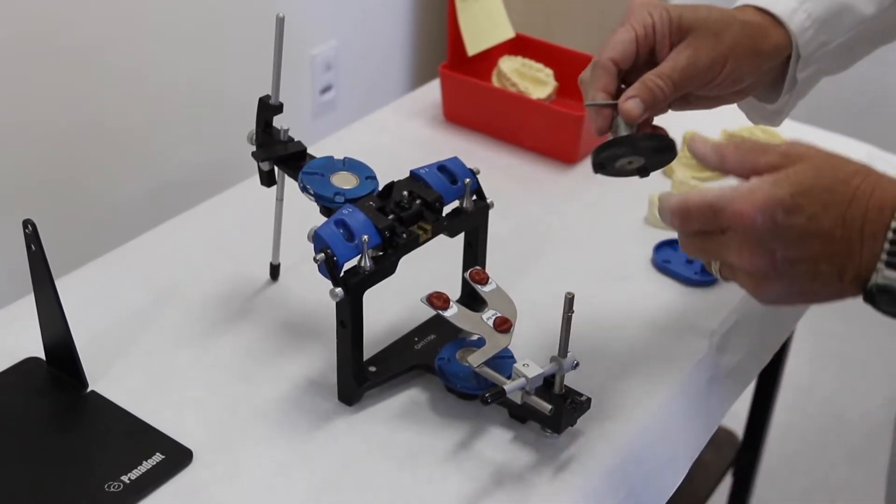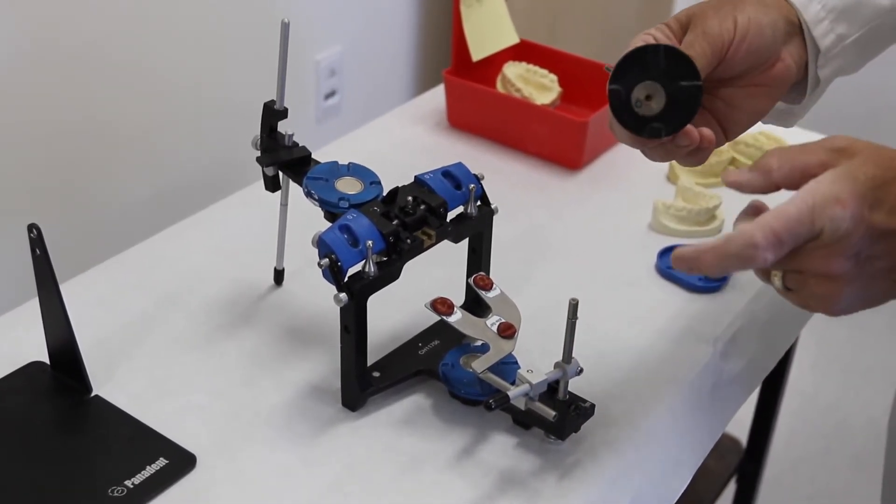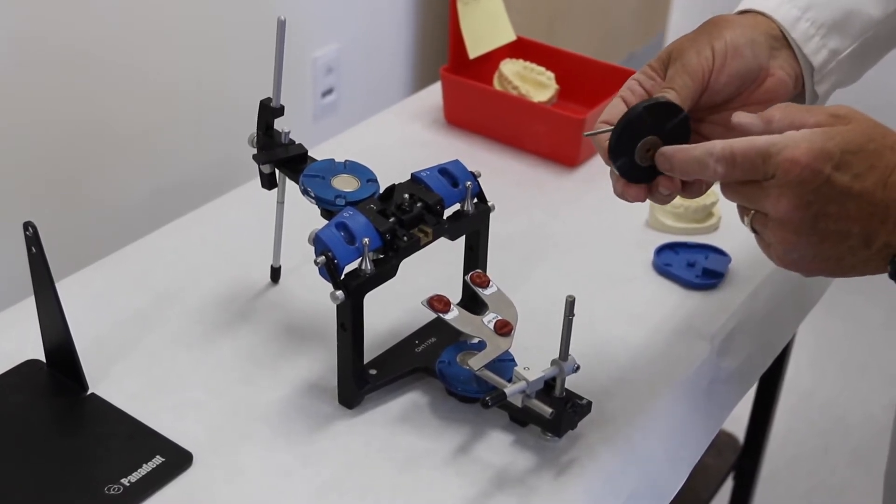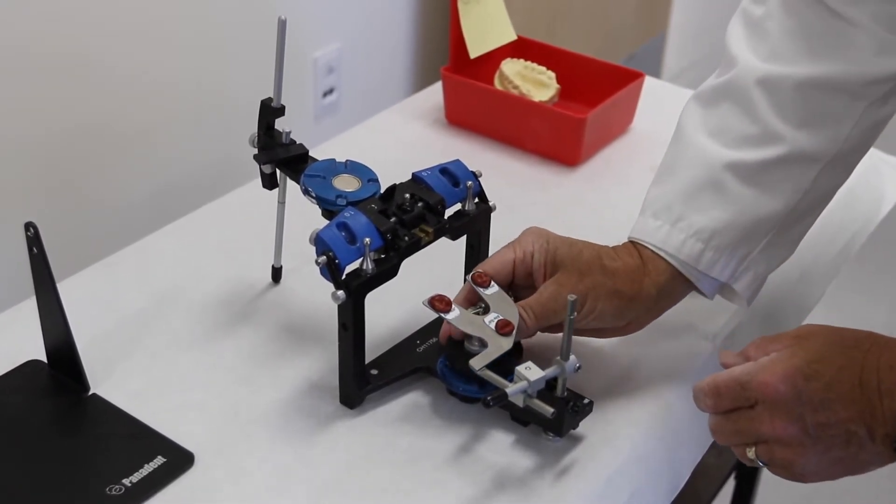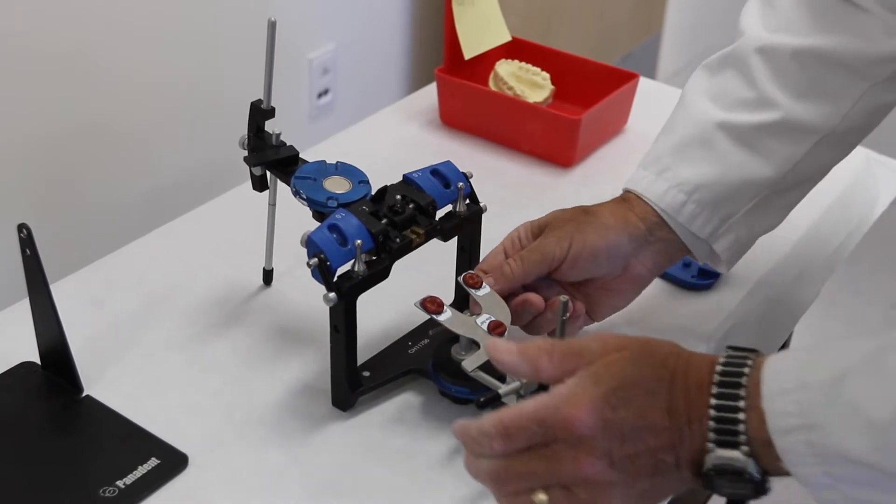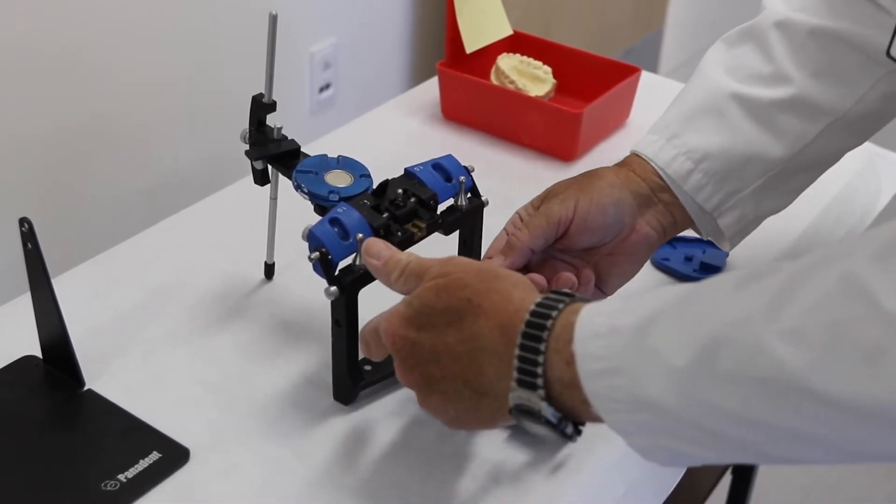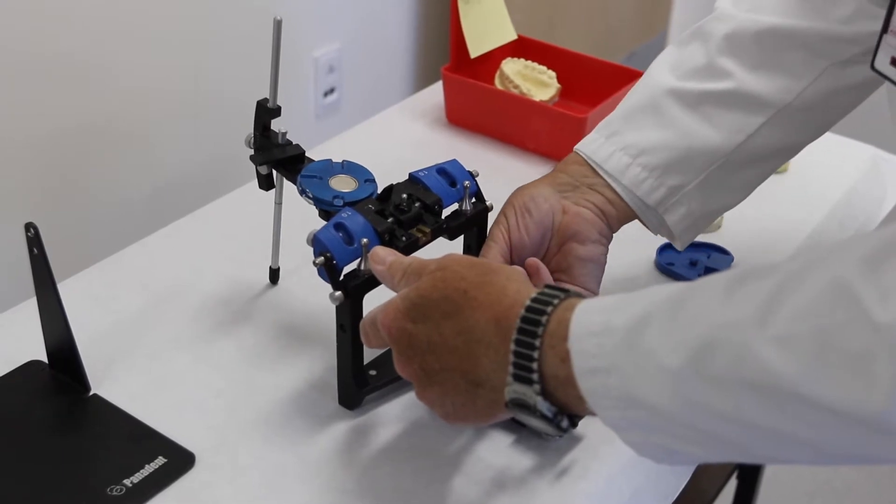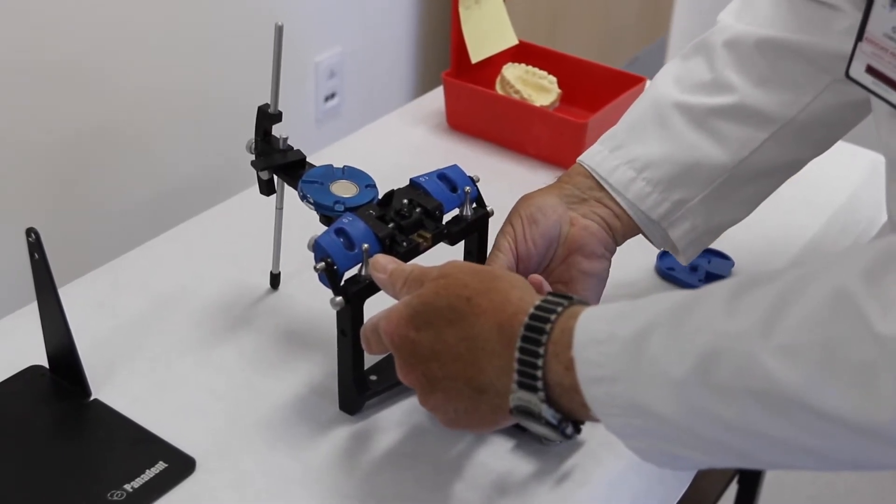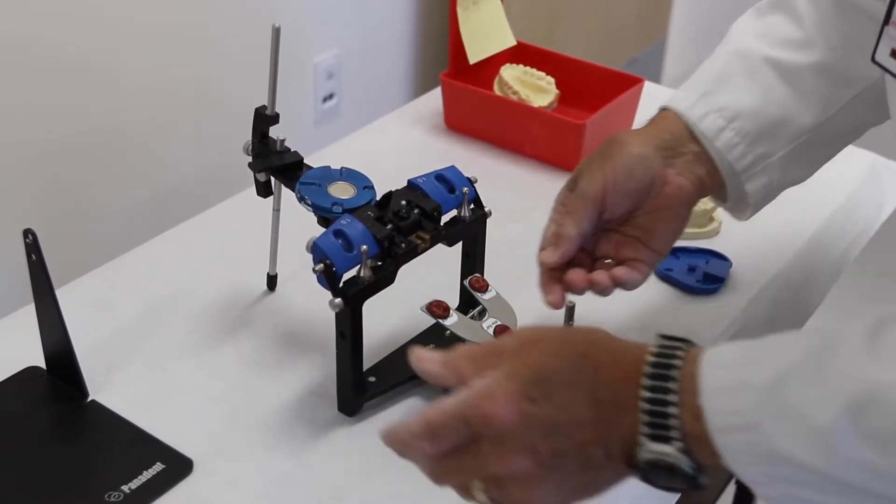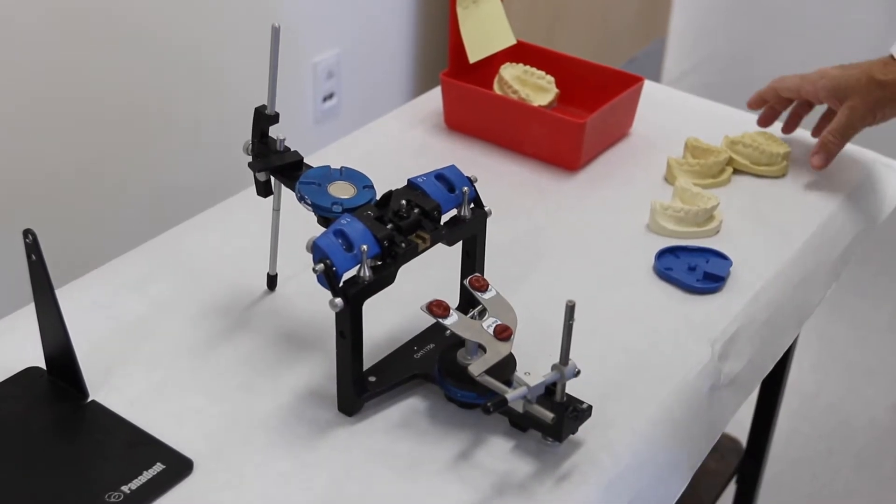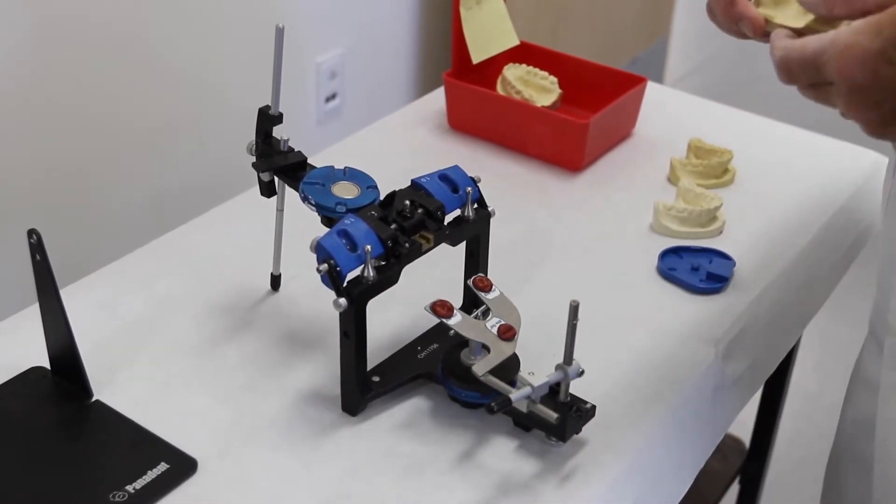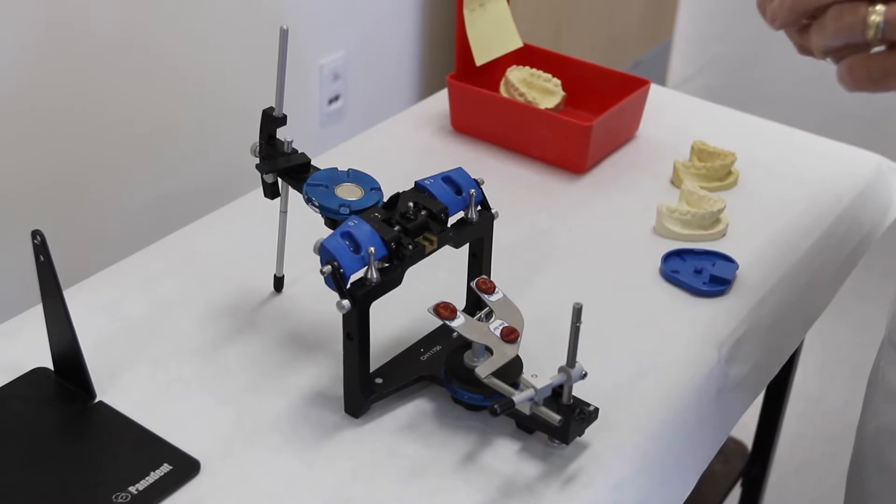You can also put this support fixture onto the articulator. Just place it underneath, loosen this, lift up the teeter-totter portion so that it's supporting the bite fork so that when you put your model on the bite fork, it does not fall down or lose its proper position.